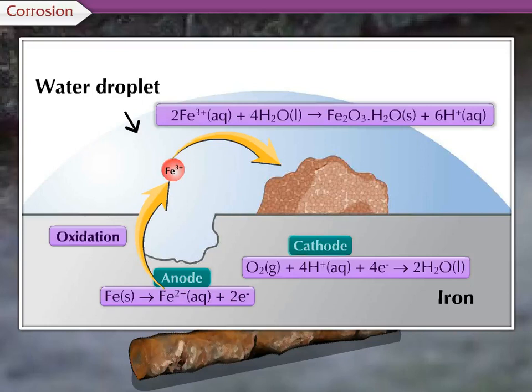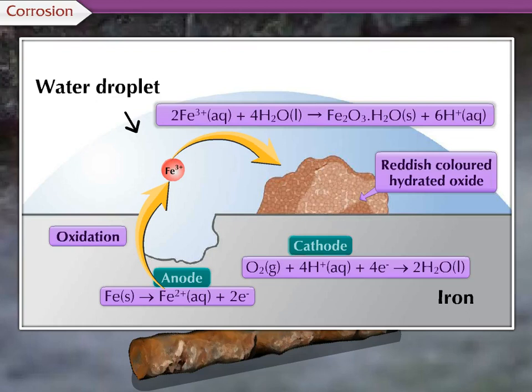These Fe3+ ions form a reddish-colored hydrated oxide. This oxide collects on the surface and is called rust.